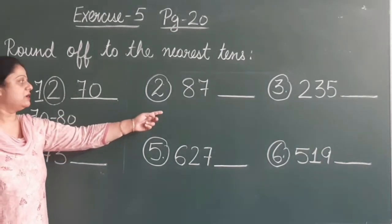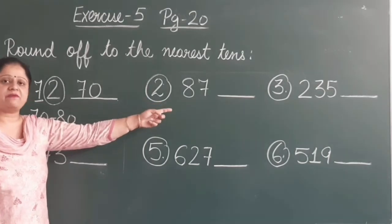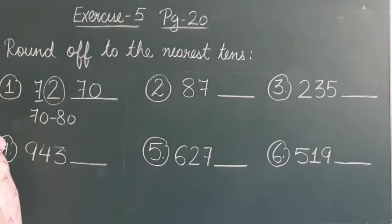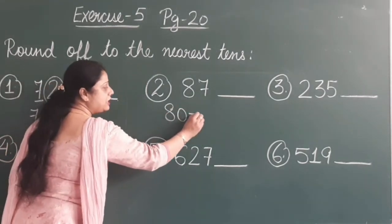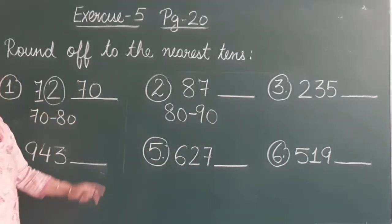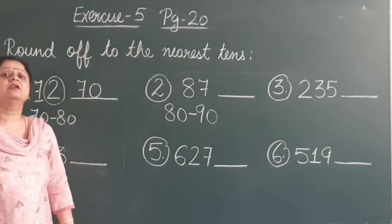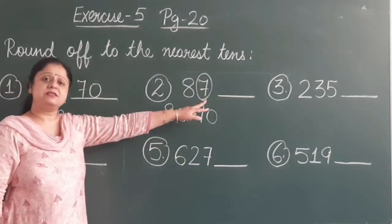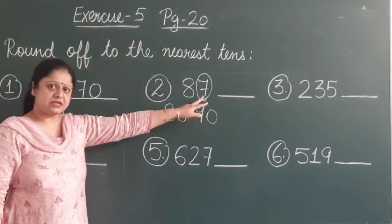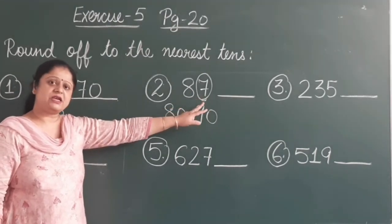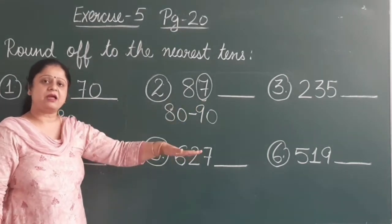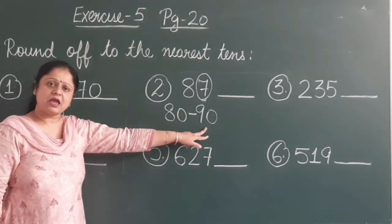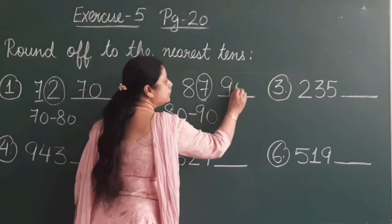Now this is your second part — number is 87. 87 is between eighty and ninety. Which place do we look at? Ones place. The ones place is 7, which is greater than 5. If ones place is greater than 5, it goes to the next number. So 87 goes toward 90. It is near to 90, so the answer is 90.